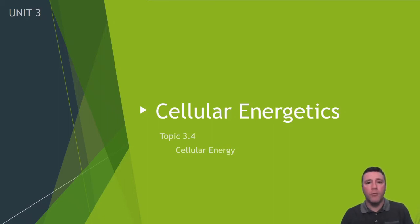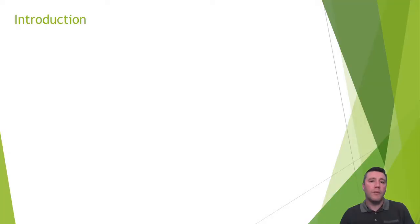Welcome to topic 3.4, cellular energy. One of the characteristics of life states that all living things require energy. That energy is used by an organism for other life processes like maintaining homeostasis, growing and developing, and responding to stimuli.